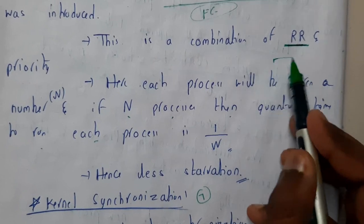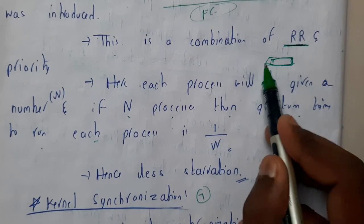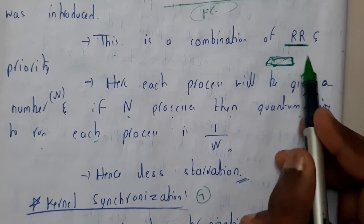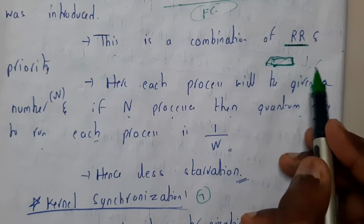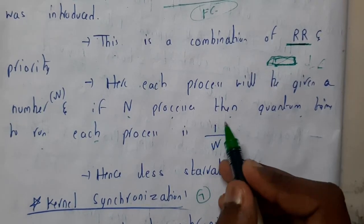Round robin will be giving us some quantum time for each process to execute. As the process executes, its burst time will be reducing. So at a particular moment of time, the execution will be done.